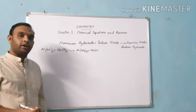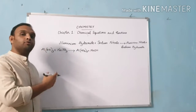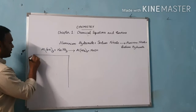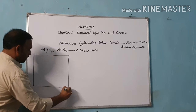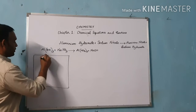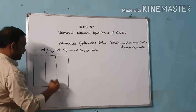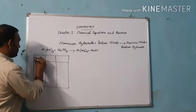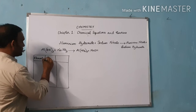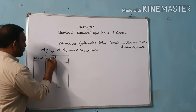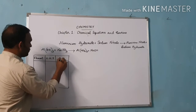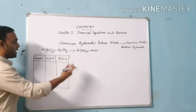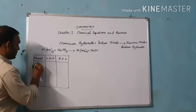The first thing we have to do is make a tabulation column. We make the tabulation column by mentioning all the elements and the number of those elements present in the left-hand side as well as the right-hand side — that means in the reactant side as well as the product side.